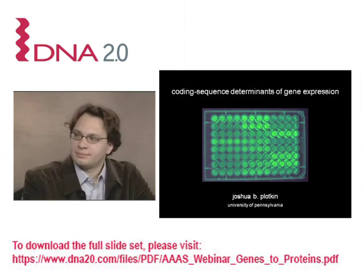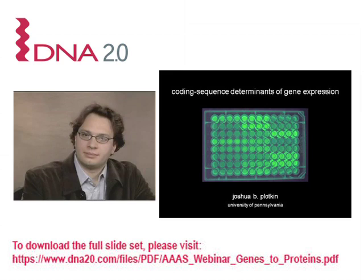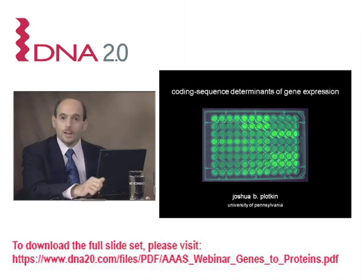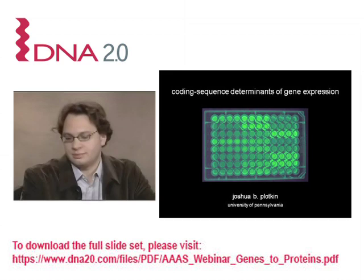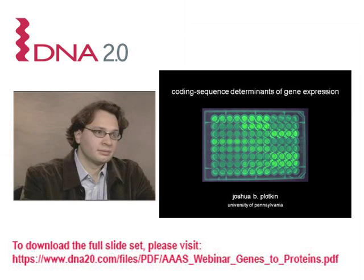Dr. Plotkin completed his undergraduate degree in mathematics at Harvard University, followed by a PhD in applied and computational mathematics from Princeton. He completed a junior fellowship back at Harvard before moving to the University of Pennsylvania in Philadelphia as assistant professor of biology and computer science. Currently Dr. Plotkin is the Martin Mayerson assistant professor of interdisciplinary studies at the University of Pennsylvania, where he studies evolutionary biology using mathematical and computational approaches, with a focus on the origin and maintenance of genetic variation in populations. He has served as an associate editor for the Journal of Molecular Evolution since 2006.